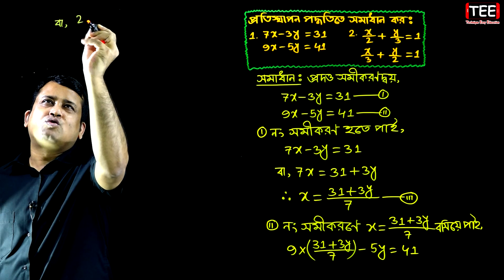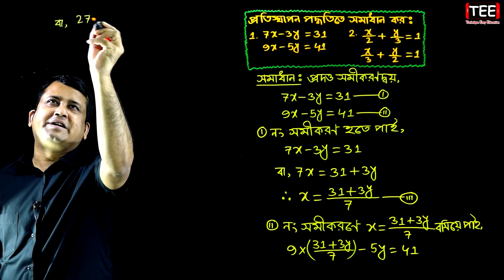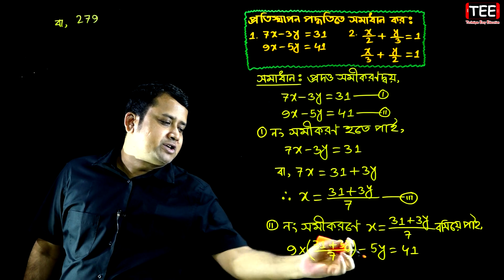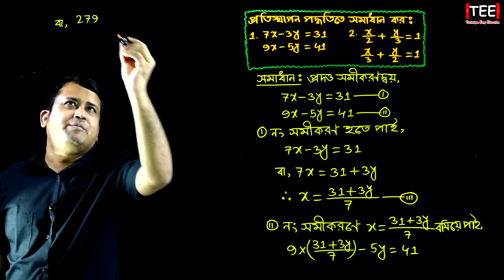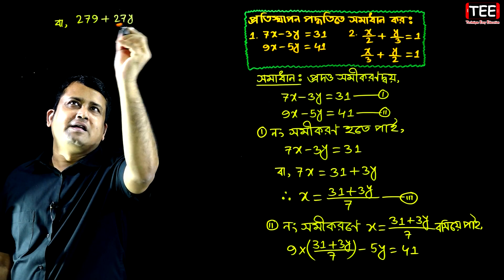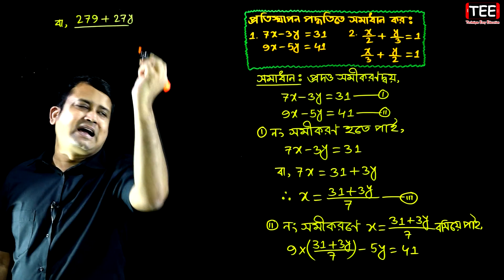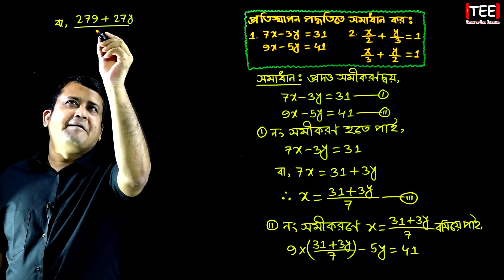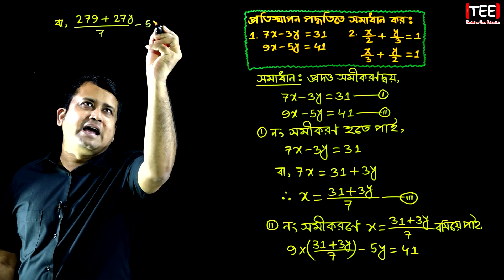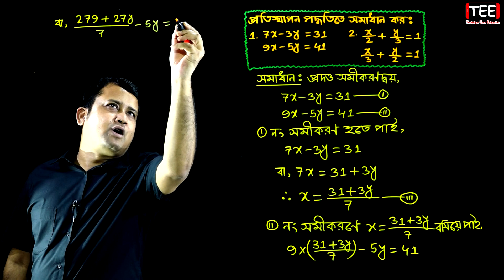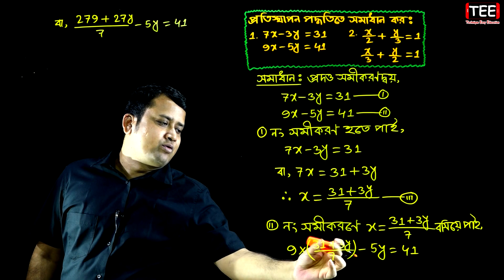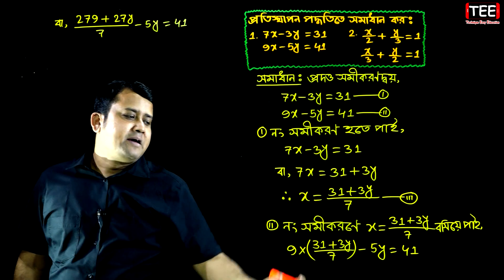The value of y is 27. And if you add 9, the value of y is 27y. The value of y is 27y, minus 5y, is equal to 41. So the value of y is 9.